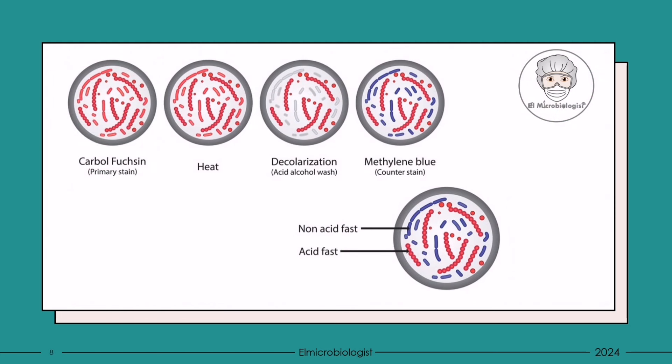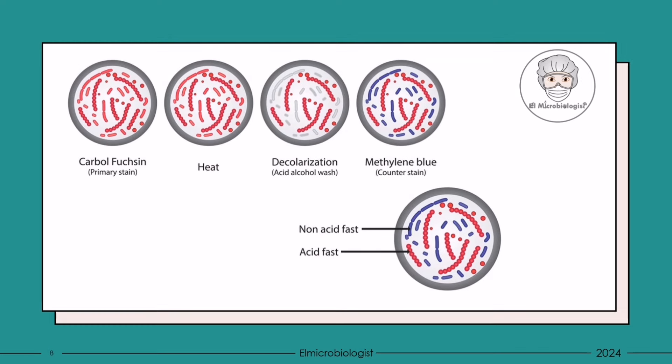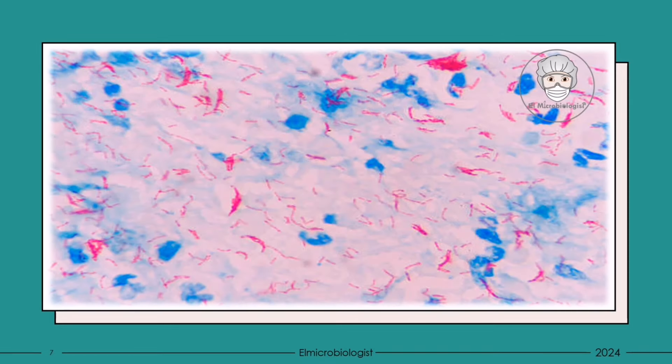So how does this acid-fast stain work? It's quite intriguing — the stain, once applied, is resistant to decolorization by acids during the staining procedure. This allows the bacteria to retain the initial stain color: a bright pink against a blue background. If you see this under the microscope, you've got a positive detection of Mycobacterium tuberculosis.